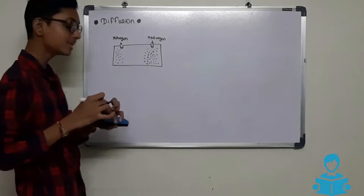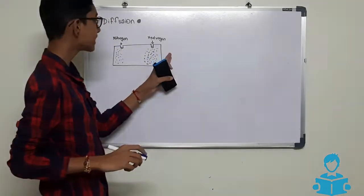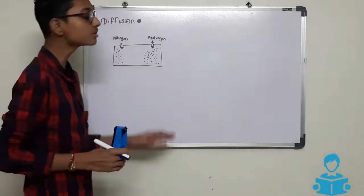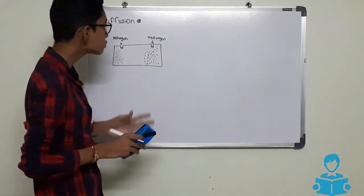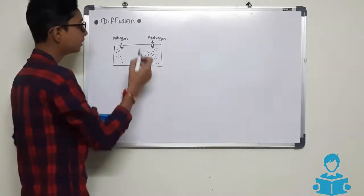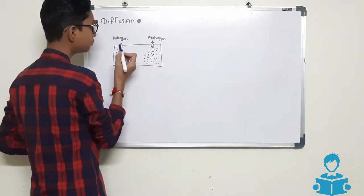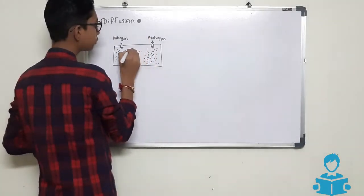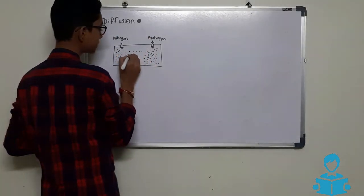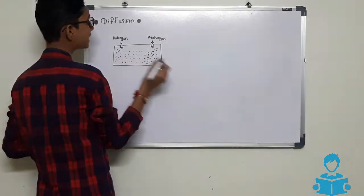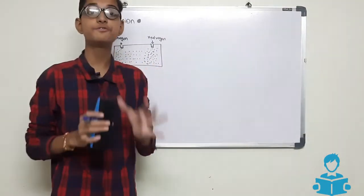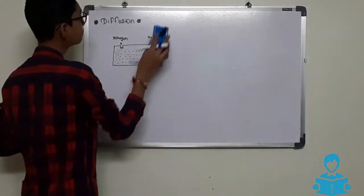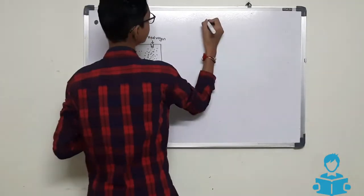Here you will see that the hydrogen gas is more than the nitrogen gas, meaning here is the higher concentration and here is the lower concentration. In diffusion, substances from higher concentration move towards lower concentration, so the hydrogen particles will move towards the nitrogen particles and both particles will get mixed — diffused — with the help of diffusion.